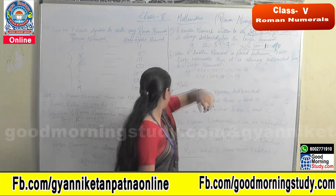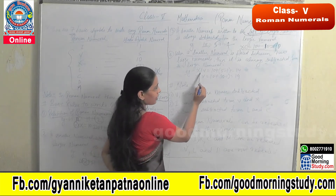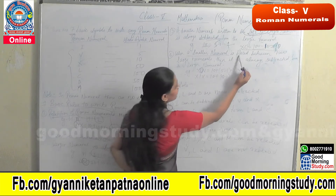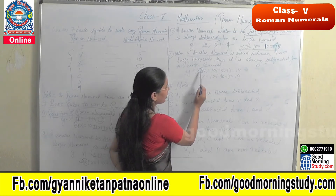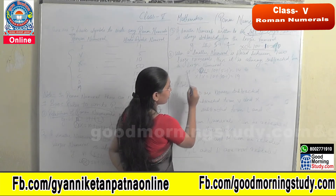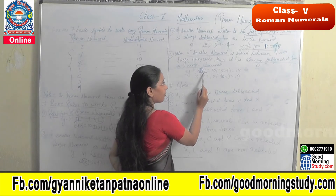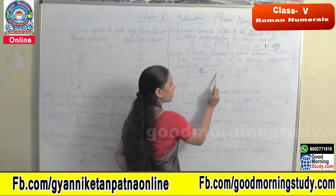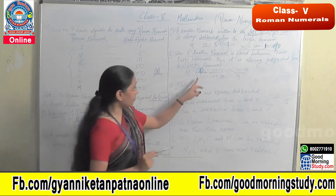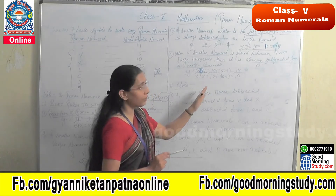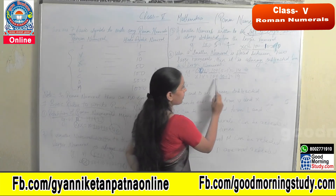The fourth rule is: when a smaller numeral is placed between two larger numerals, it is always subtracted from the numeral immediately following it. For example, XIV — I is the smallest, placed between X and V. X stands for 10, and IV means 5 minus 1 equals 4, so 10 plus 4 equals 14. Similarly, XIX — X is 10, and IX means 10 minus 1 equals 9, so 10 plus 9 equals 19.